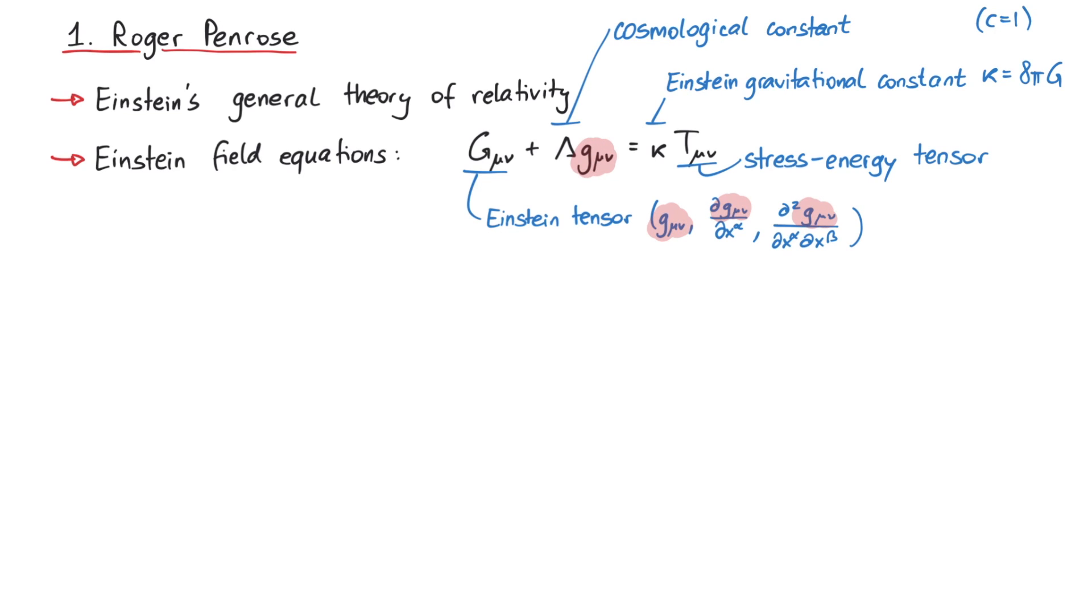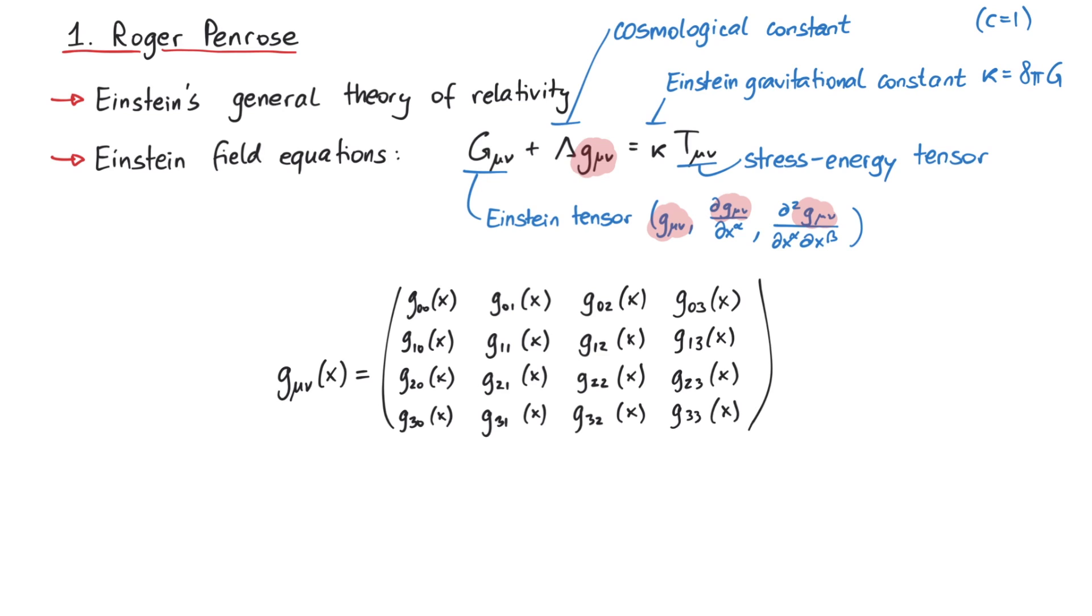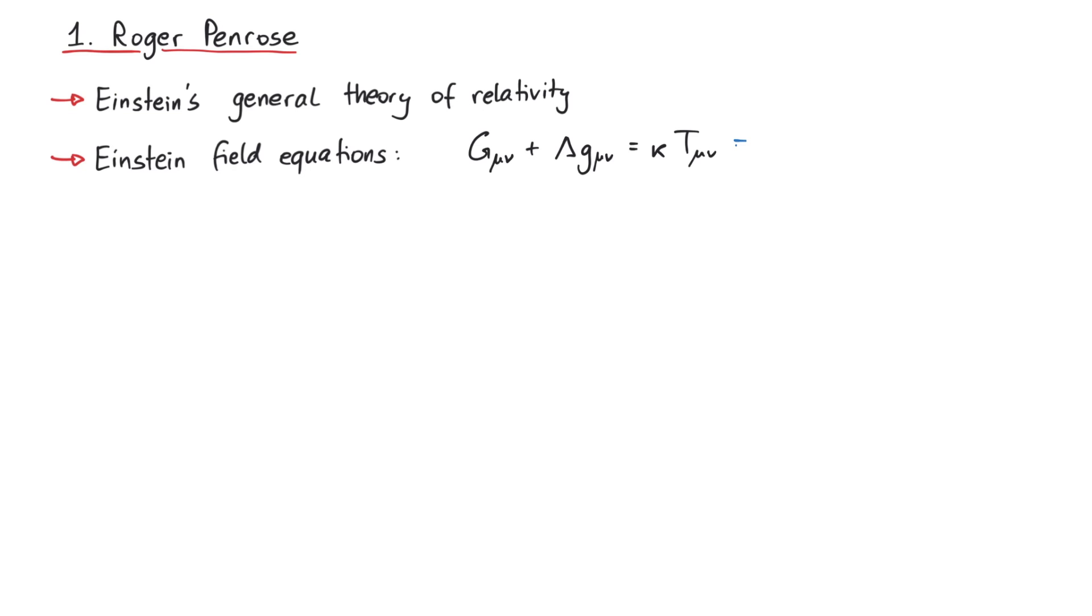These field equations are simply speaking differential equations where the unknown variable is the metric of spacetime. So when we speak of a solution of the Einstein field equations, we mean that we calculated how the 16 components of the metric tensor look like. The only input we need is the stress-energy tensor T. For example, if we set T equal to zero, this corresponds to a vacuum and will give us a metric that is valid in a vacuum.